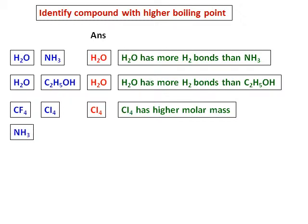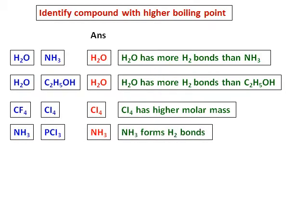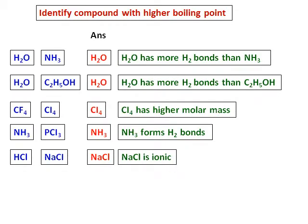Then we have ammonia, again a compound that forms hydrogen bonding, and let us compare it with PCl3. PCl3 is polar but it cannot form hydrogen bonding, and hence ammonia will have a higher boiling point because it can form hydrogen bonds. Then we have ICl — it is a polar compound — and let us compare it with NaCl, an ionic compound. Whatever the case, an ionic compound will have a higher boiling point because the ionic bond is much stronger than any of these intermolecular forces, and hence NaCl will have a higher boiling point.